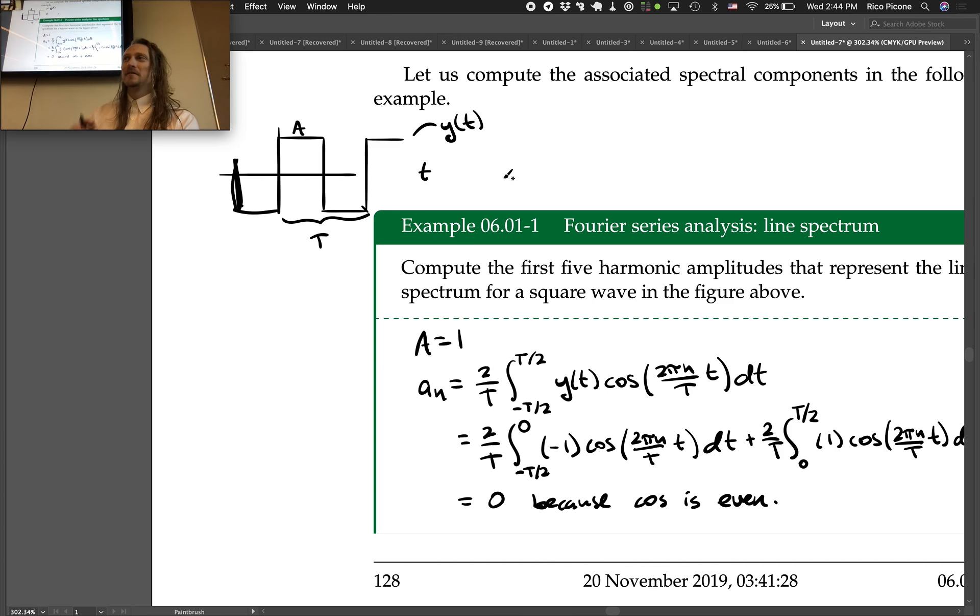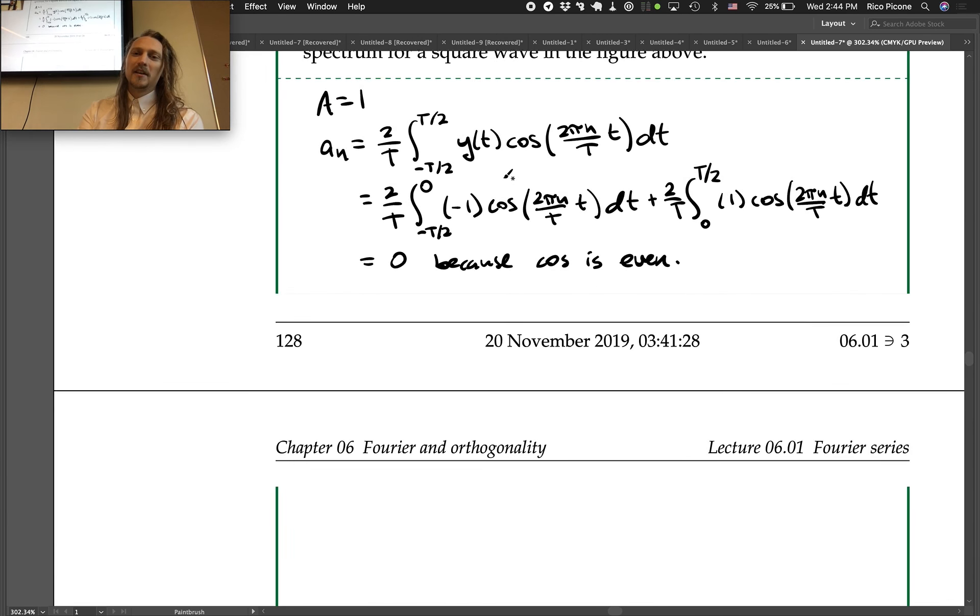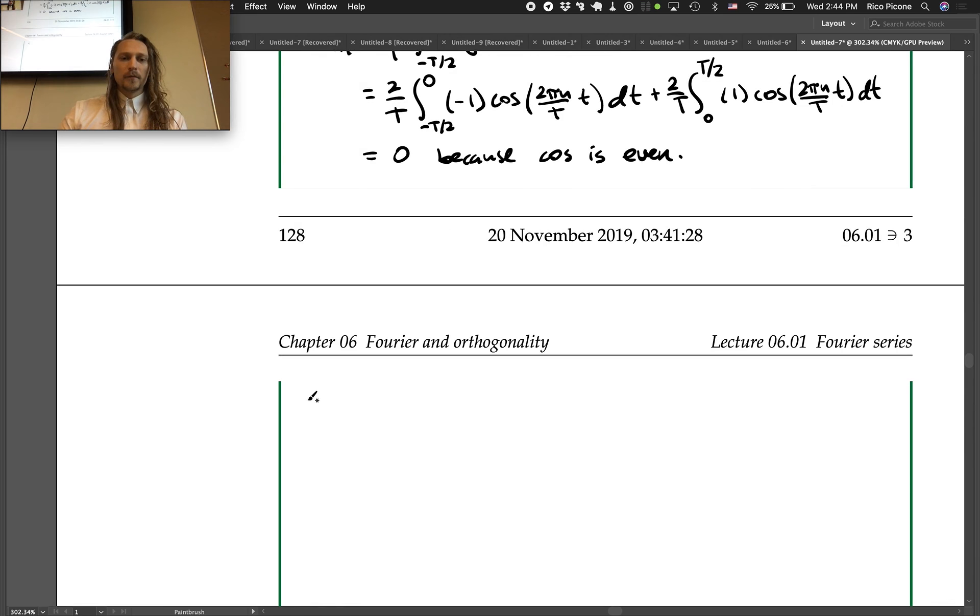So, nice little thing to keep in mind. So, our bns are 2 over t integral from minus t over 2 to t over 2 of y of t times sine 2 pi n over t t dt.